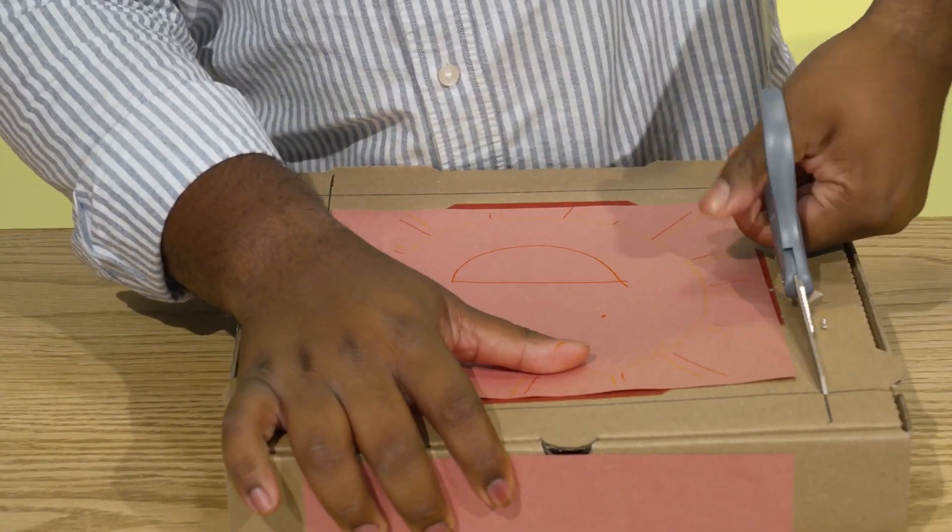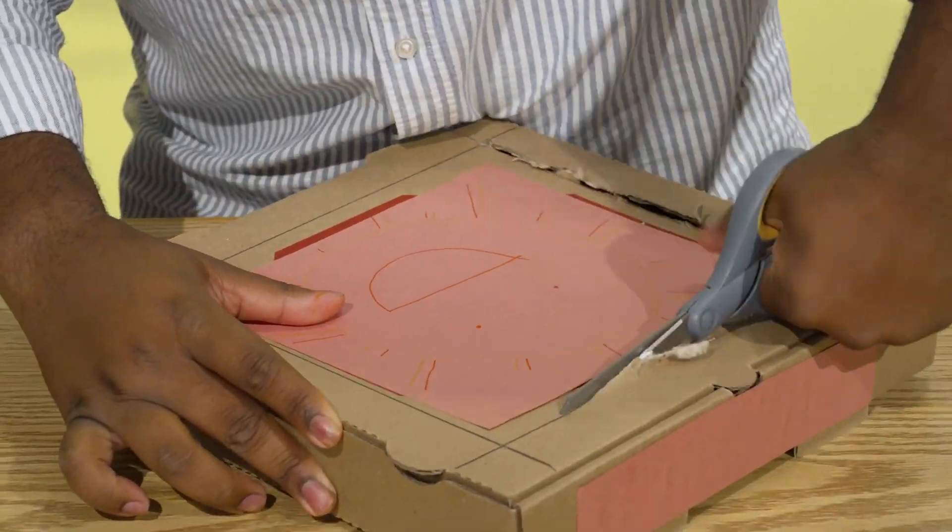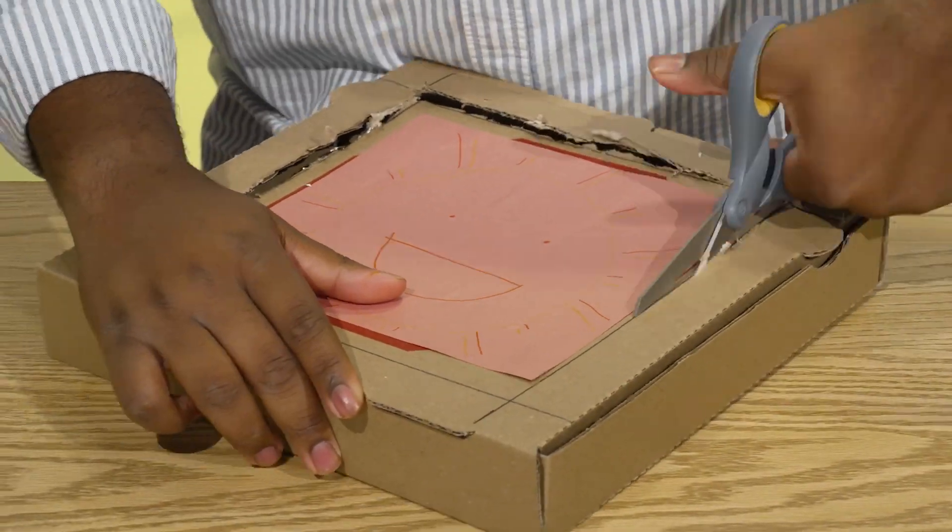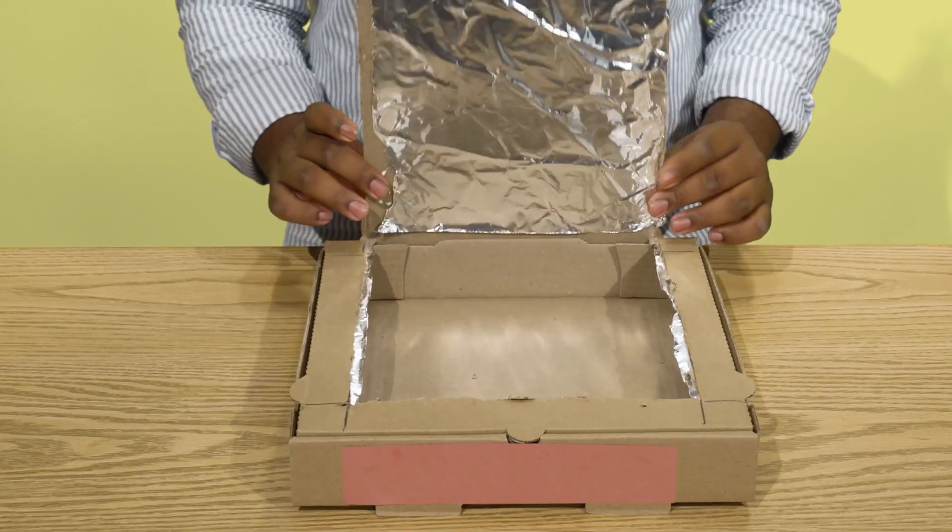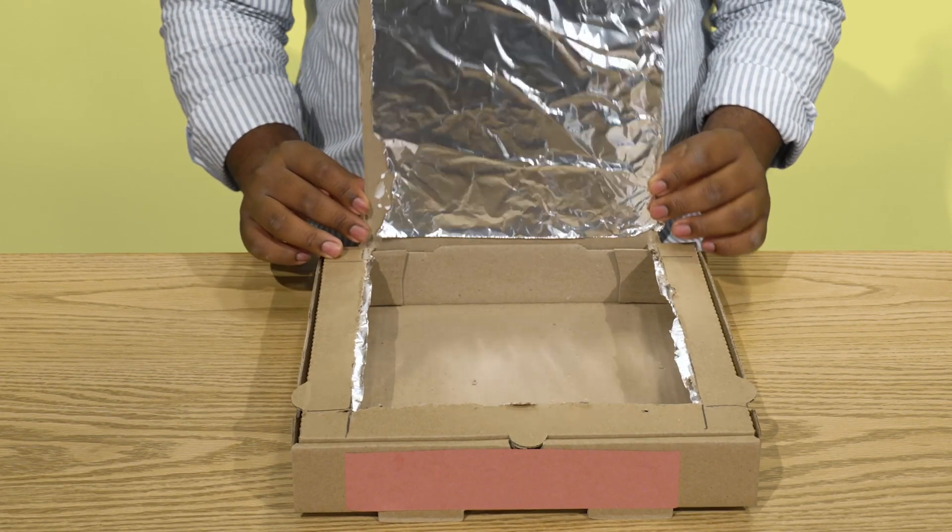Carefully use the scissors to cut along the square, but only cut the three sides that open with the lid. Fold the uncut side to create a flap that stands up.